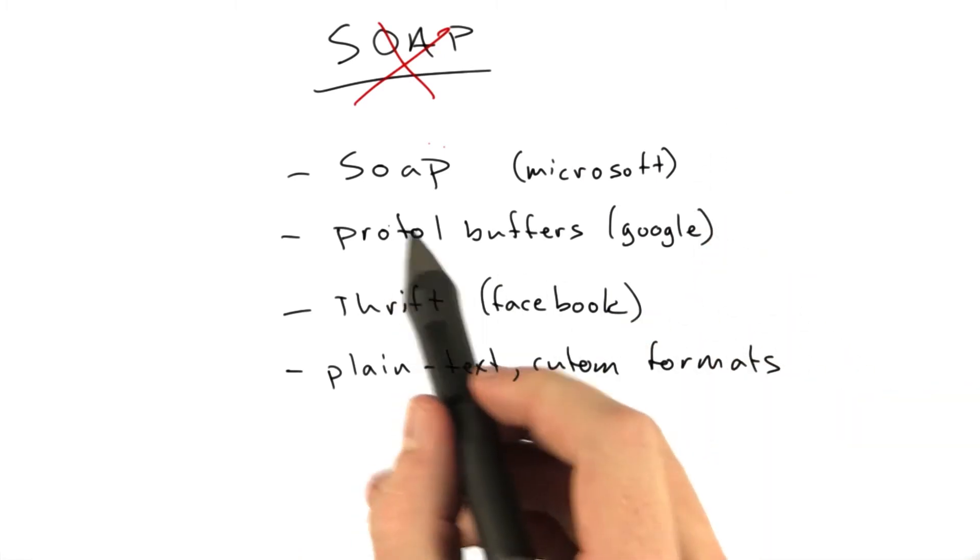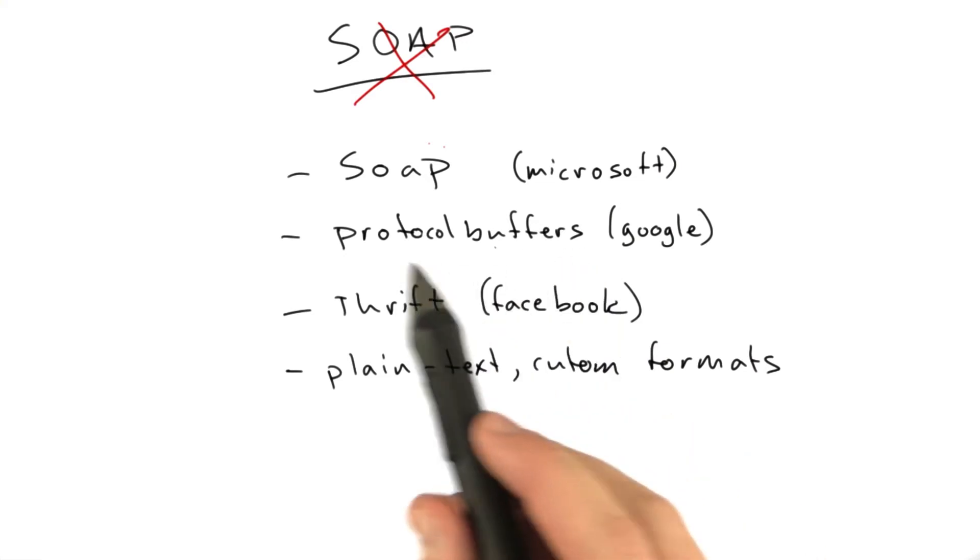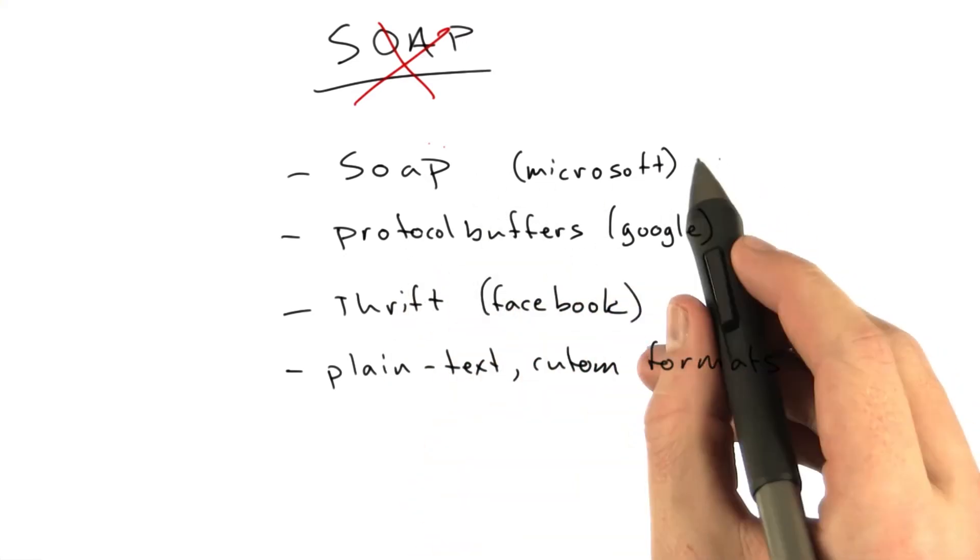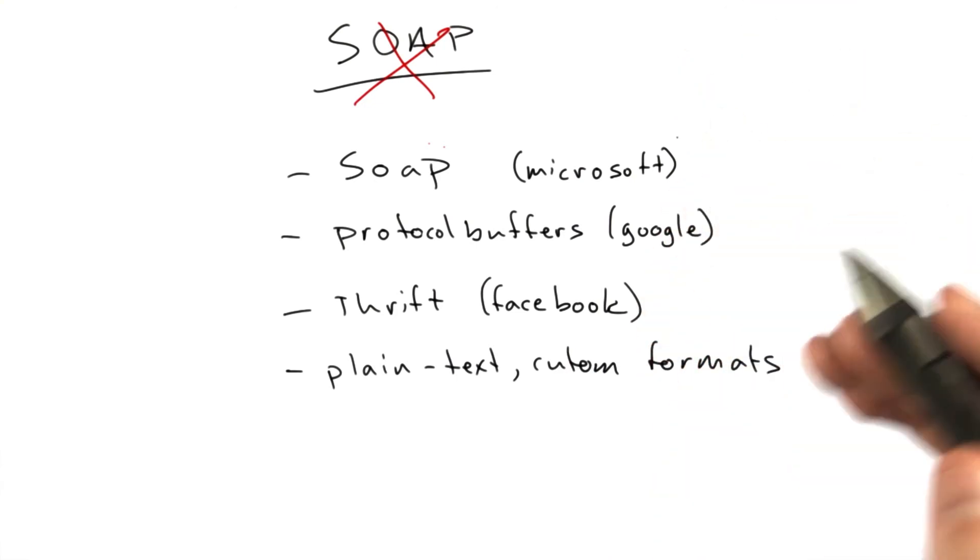Now, these are not all the same. SOAP defines a whole protocol. Protocol buffers are really how to encode data. Thrift is how to encode data over the wire. These compare more to JSON. SOAP compares more to HTTP plus JSON, kind of the whole package, the protocol and the data type.